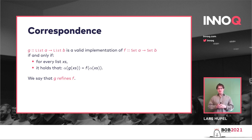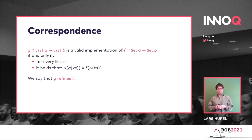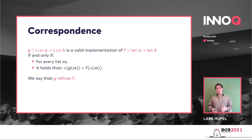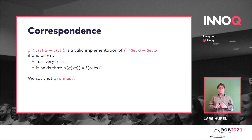These are basically the two paths through the diagram. You can go from the bottom-left corner to the top-left and then to the top-right, or you can go from bottom-left to bottom-right and then to top-right. Those two paths through the diagram should be equivalent to each other.